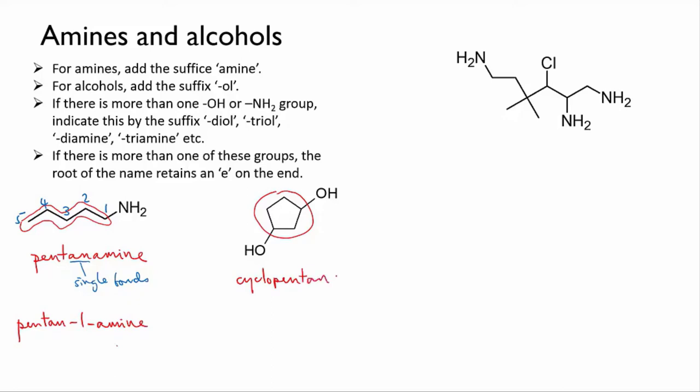But there are two of them, so we indicate this by calling it a diol, two alcohols, and the name becomes cyclopentanediol.